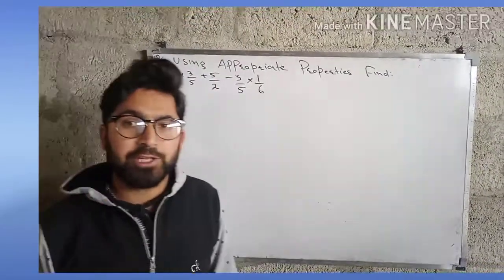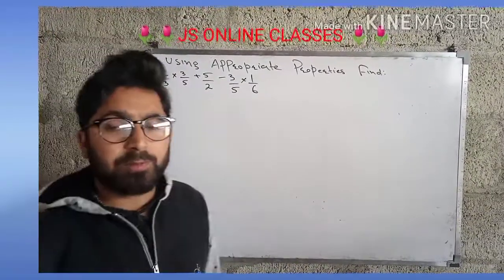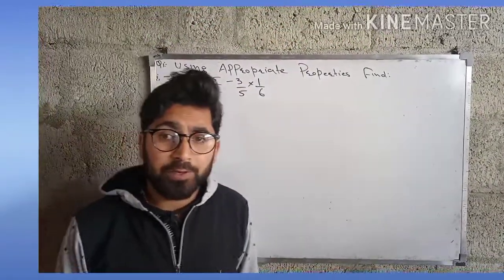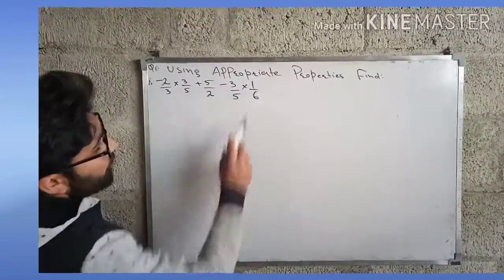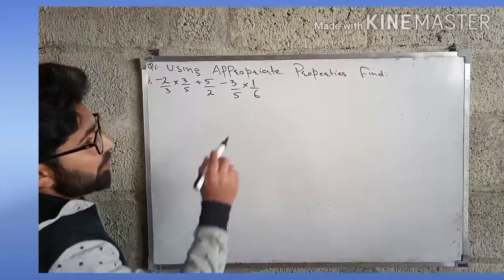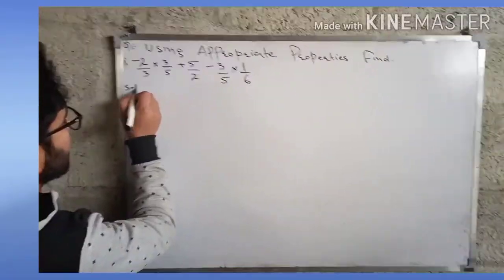Hello viewers, welcome to my channel JS Online Classes. Today I have taken rational numbers class 8th, and from that topic I have chosen question first of rational numbers. That is using appropriate properties to find. We have to use appropriate properties and find the answer to this question, so let's start without wasting our time.